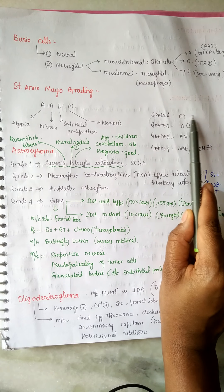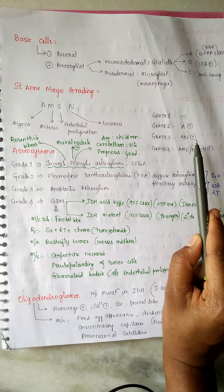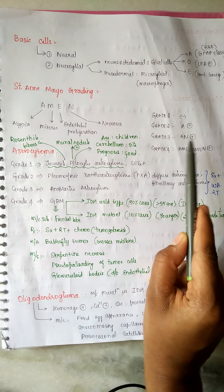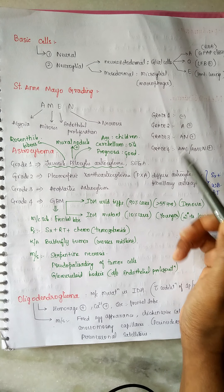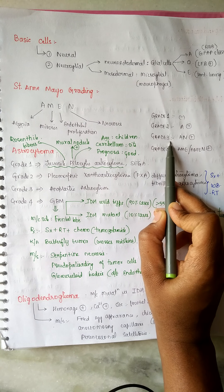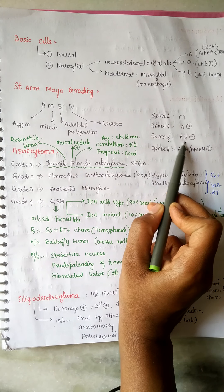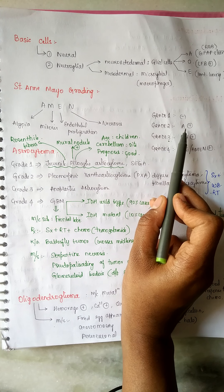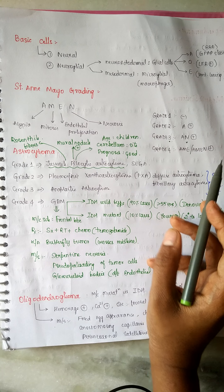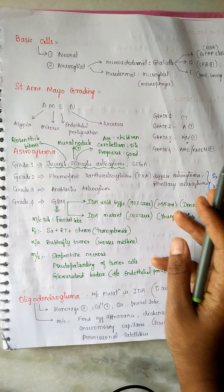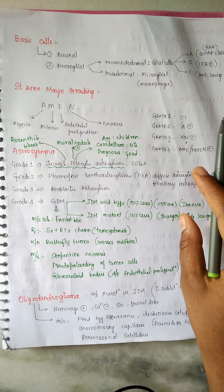The grading works as follows: Grade 1 — all four (AMEN) are absent. Grade 2 — only the first one (atypia) is present. Grade 3 — the first two (atypia and mitosis) are positive. Grade 4 — either three or all four are positive. So if asked about Grade 3, write the first two letters; Grade 2, only the first; Grade 4, the first three or all four positive.